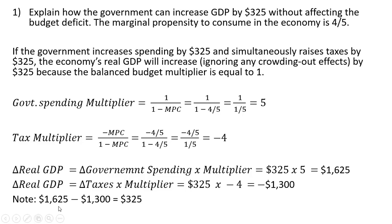If we were to net these two numbers: overall, government spending expands GDP by $1,625, but the increase in taxes reduces GDP by $1,300. Overall, GDP goes up by $325. That's it. I hope you found this video helpful.